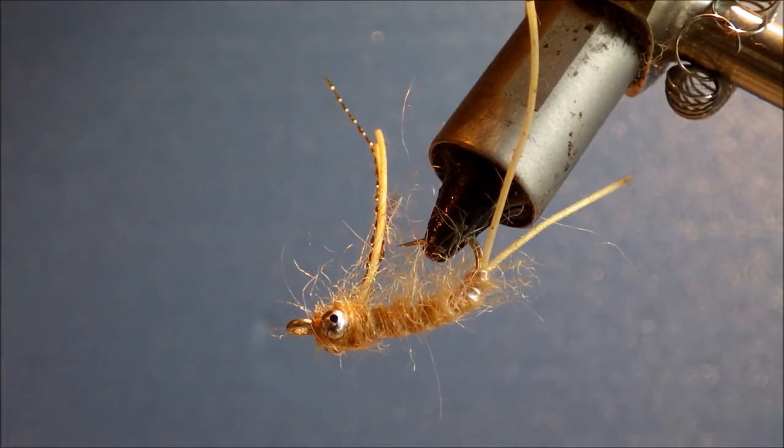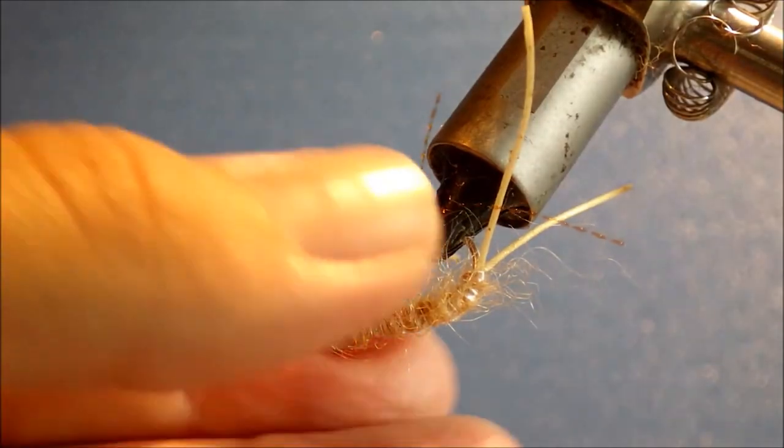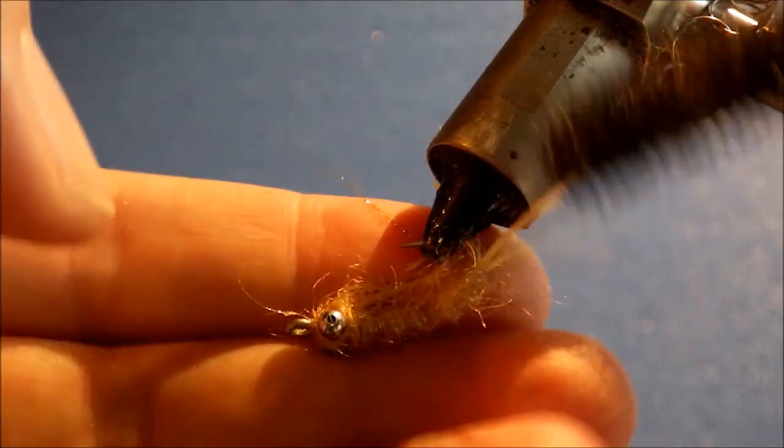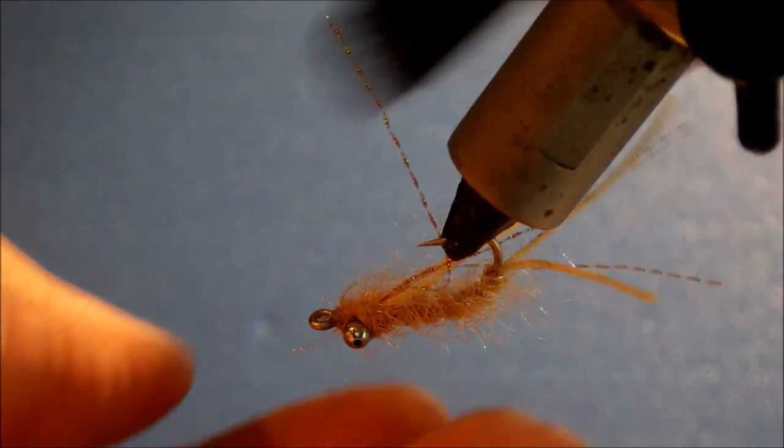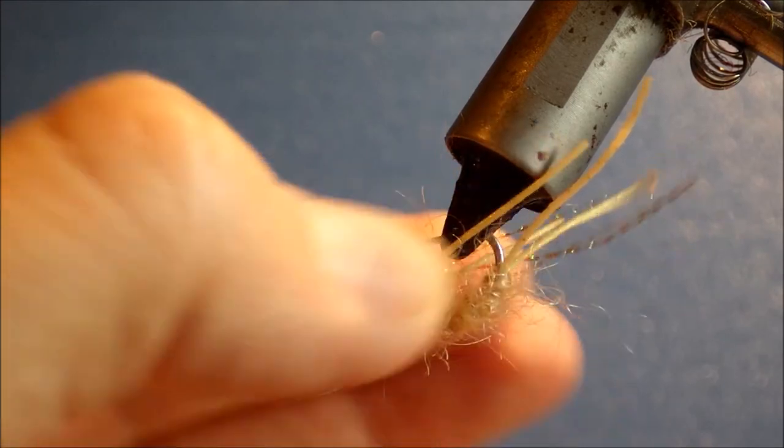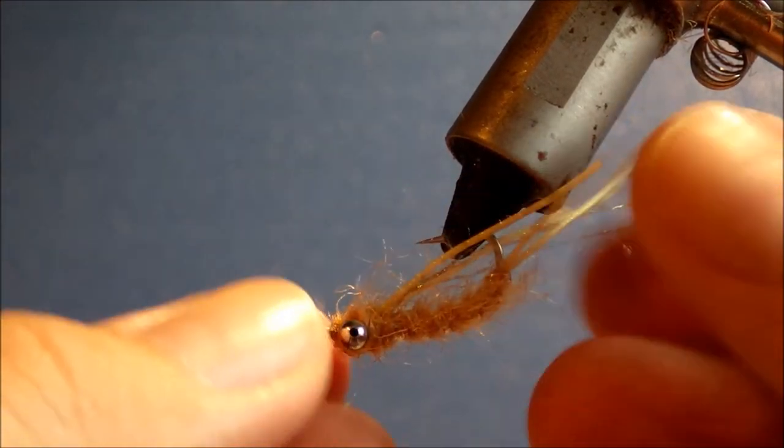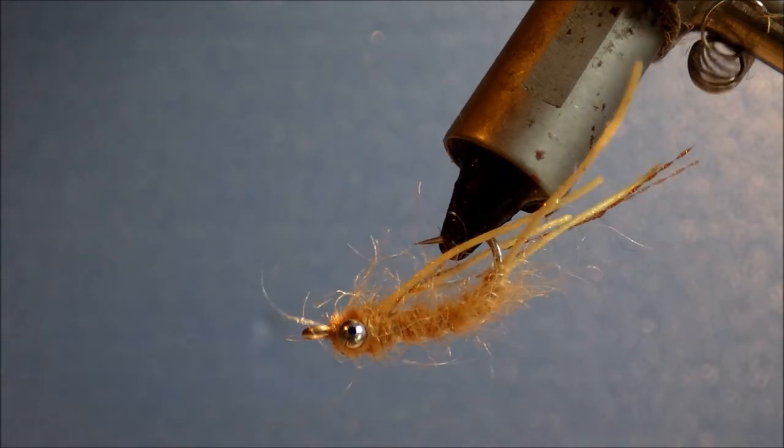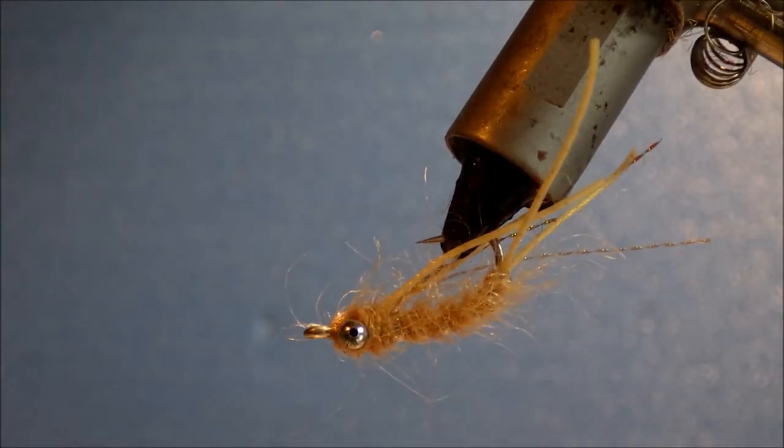And what actually happens is once it's been wet, the rib seems to change colour slightly. It loses its, or once it's been fished, it loses its sort of initial shine and sort of blends it more in with the colour and gives you a really nice segmented body effect.